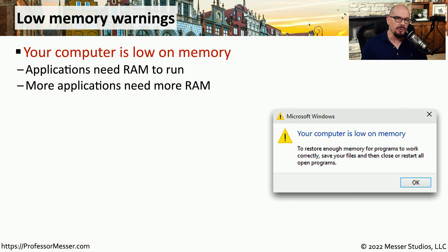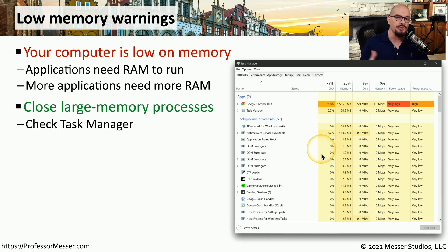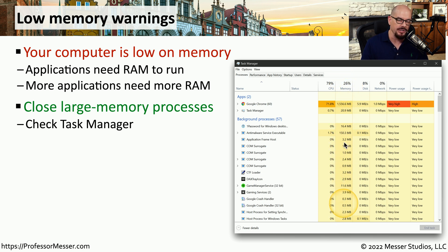One of the most important resources on our computer is memory, because that's where our applications execute. If we run out of memory, we can't run the applications, and you'll see a message that says your computer is low on memory. If that happens, try closing applications that are using a lot of memory. One way to see this is from Task Manager — look at the memory tab, sort by that column, and see which application is using the most RAM.